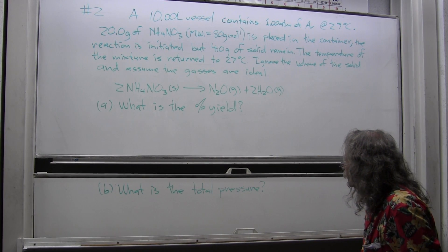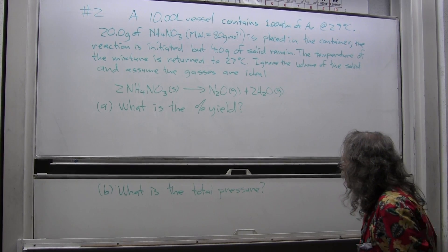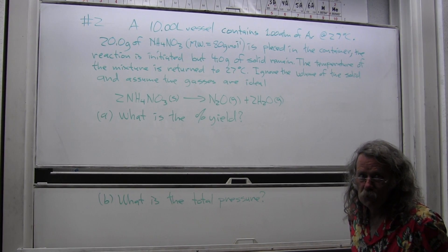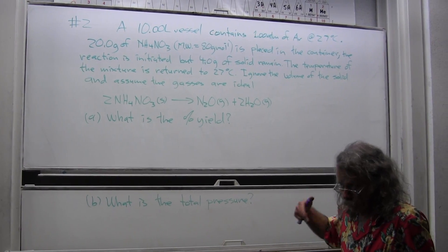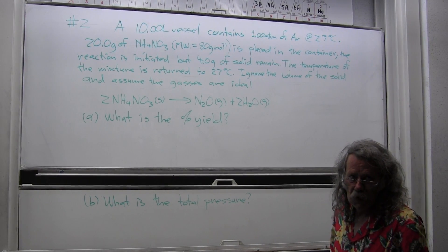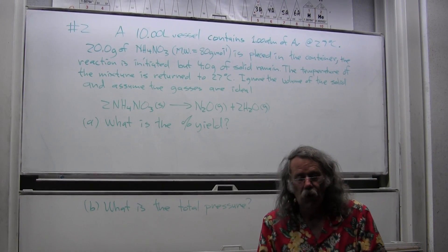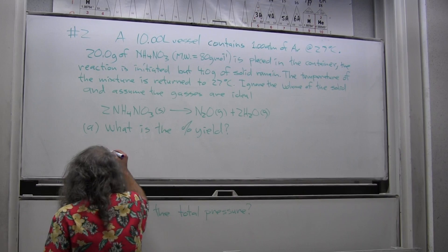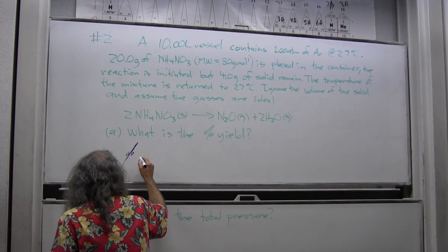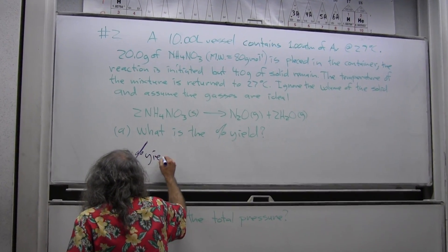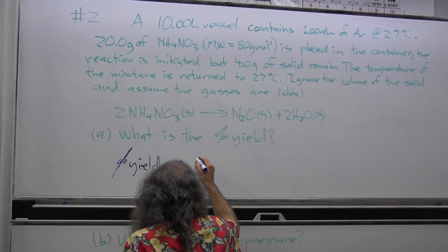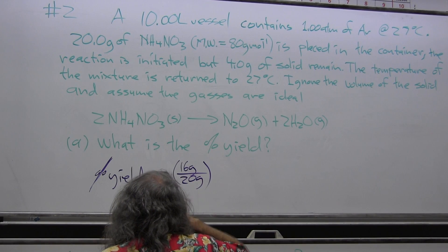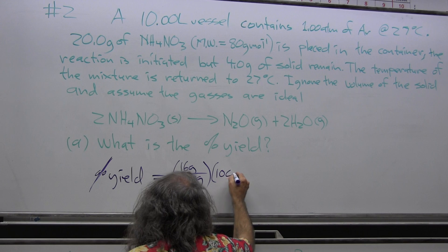And the rest of it underwent the decomposition to get nitrous oxide and water. So that means there were 16 grams of material that were decomposed, and the total theoretical yield would be all 20 grams decomposed. So the percent yield is going to be equal to 16 grams over 20 grams times 100 percent.